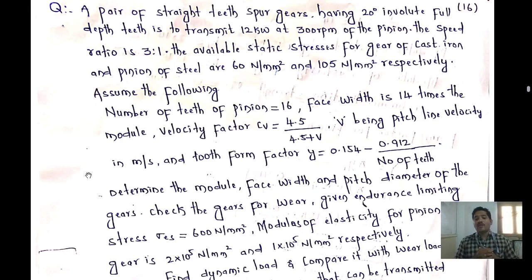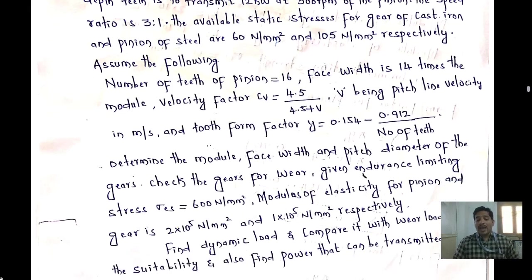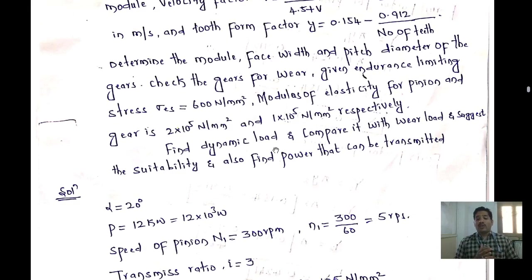We need to find face width B and pitch diameter D of the gear. Also check the gear for wear. The endurance limiting stress is given as 600 N/mm². Modulus of elasticity for the pinion E1 = 2×10⁵ N/mm² and for the gear E2 = 1×10⁵ N/mm². Find the dynamic load, compare it with the gear load, and also find the power that can be transmitted.